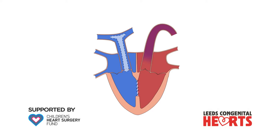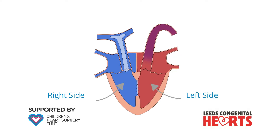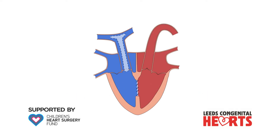Once the heart is repaired, blood that has low levels of oxygen no longer passes from the right side of the heart to the left side of the heart, and this means the patient's oxygen levels become normal. It also becomes much easier for the heart to pump blood to the lungs, and so the thickening of the right ventricle improves.